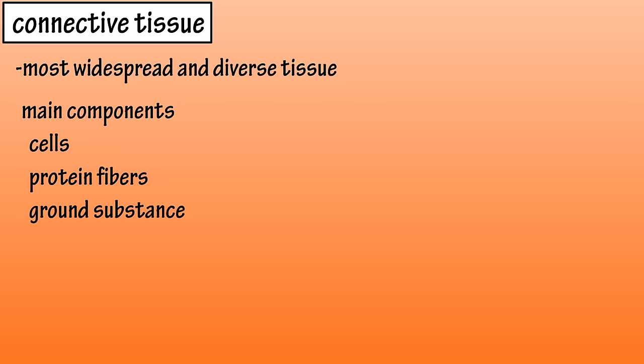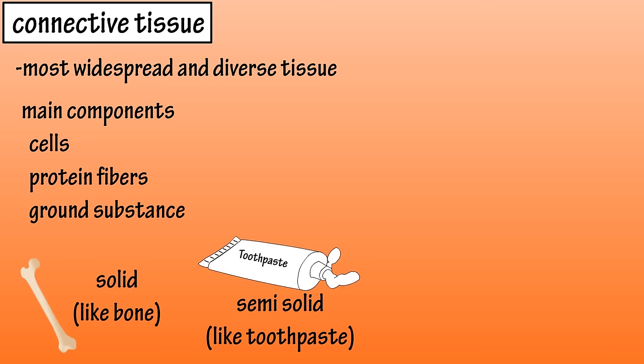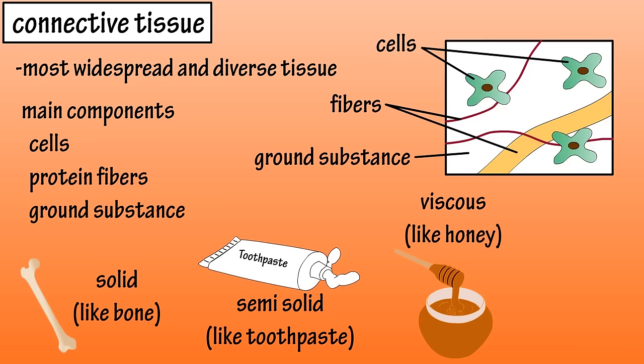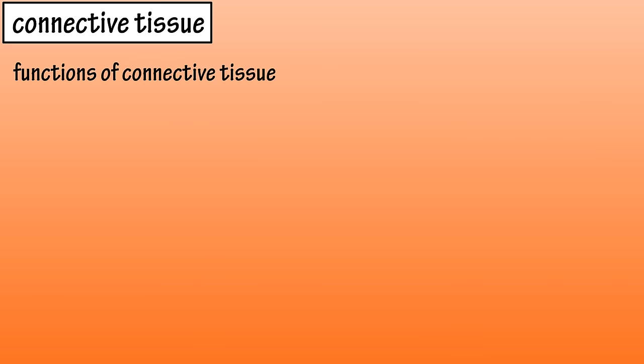Ground substance is produced by connective tissue cells. It is a non-cellular material, and it can be solid, semi-solid, or viscous, meaning thick and sticky. The cells and protein fibers reside within this ground substance, and the ground substance and protein fibers together are often referred to as the extracellular matrix.